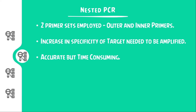Nested PCR is one of the many PCRs used. In this technique there are two PCR steps involved, using outer and inner primers. The first step is carried out using the outer primer and results in amplifying the standard strand. The second step is carried out using the inner primers, which concentrates more on the target DNA inside the standard strand.